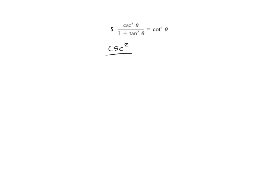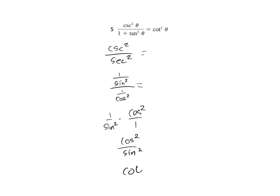Number 5: cosecant squared. Look at your Pythagorean identities. I'm going to change 1 plus tangent squared into secant squared. Then make that 1 over sine squared over 1 over cosine squared. That is 1 over sine squared times the reciprocal — keep, change, flip — giving cosine squared over sine squared, which is cotangent squared. And that's what we have.